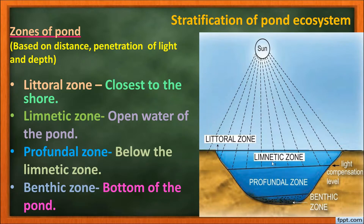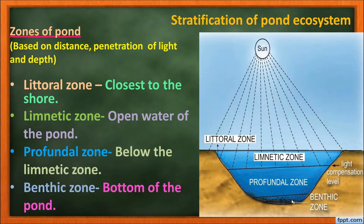The deeper region of the limnetic zone is the profundal zone, where there is no effective sunlight and heterotrophs predominate — organisms that live on other organisms and plants. The bottom-most zone is the benthic zone, occupied by a community of organisms called benthos, which are bottom dwellers — usually decomposers and mollusks. The productivity of the ecosystem depends on organisms and plants in the littoral and limnetic zones, where greater light penetration supports photosynthesis.